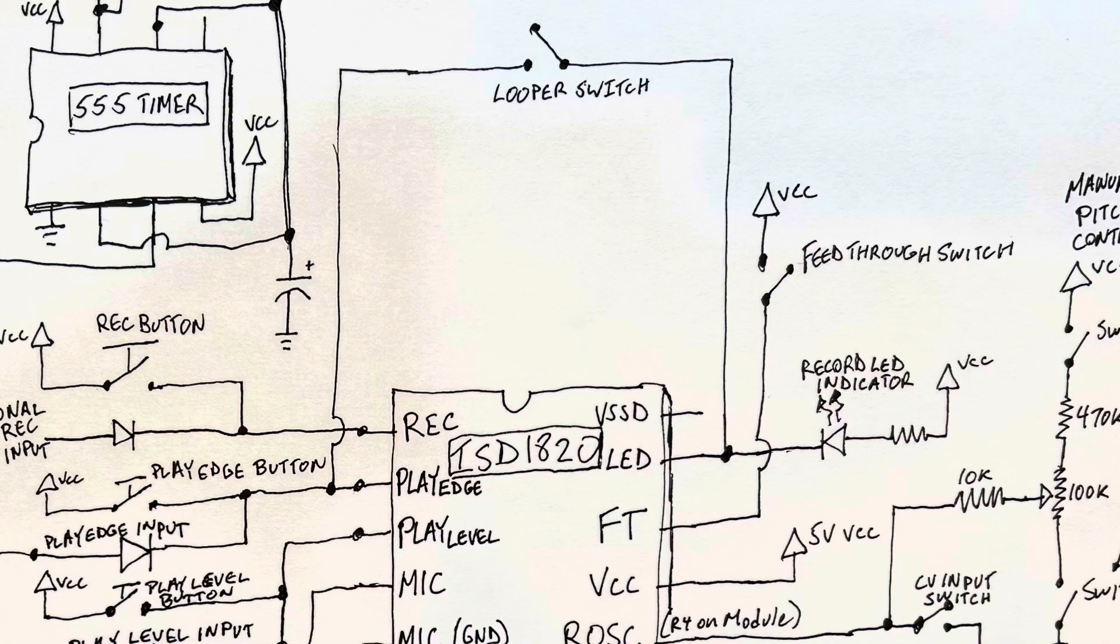And so a little bit further explanation on the feed through and the LED portion of the circuit. So the feed through pin is basically when it's brought to VCC, all of the other playback, play edge, play level and record pins go low. And it allows anything that comes in any input through the microphone, go directly to the output, to the speaker or amplifier, whatever you're using.